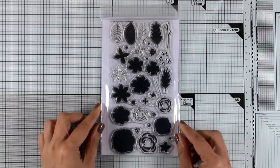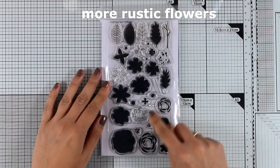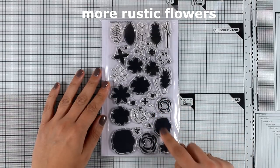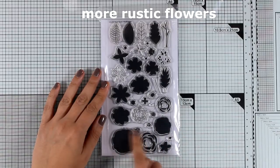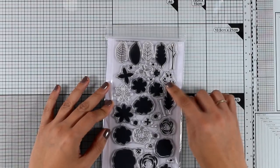Now this is another stamp set with flowers. It's called More Rustic Flowers and again it's a layering flower set so you get a little black line grouping some of those designs so you know which one goes on top of another.